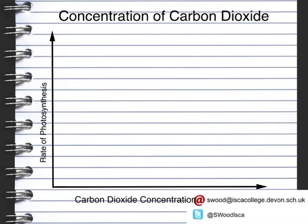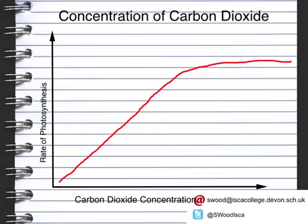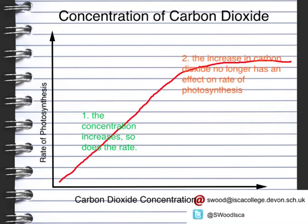A similar thing happens with the concentration of carbon dioxide. As the concentration of carbon dioxide increases, so does the rate of photosynthesis. It gets to a certain point and then it plateaus, which means it no longer has an effect on the rate. Unlike temperature, the rate carries on at the same level. At stage 1, carbon dioxide is a limiting factor. At stage 2, the increase in carbon dioxide concentration no longer has an effect, so the limiting factors become temperature or light intensity.